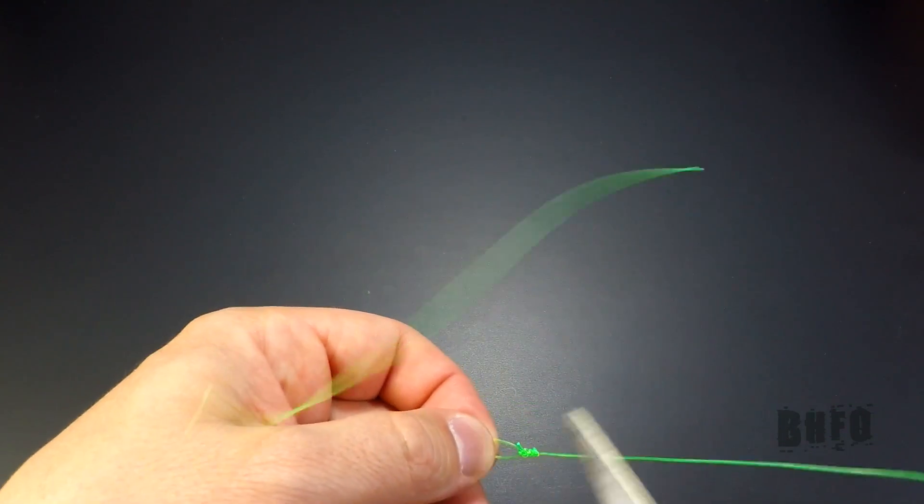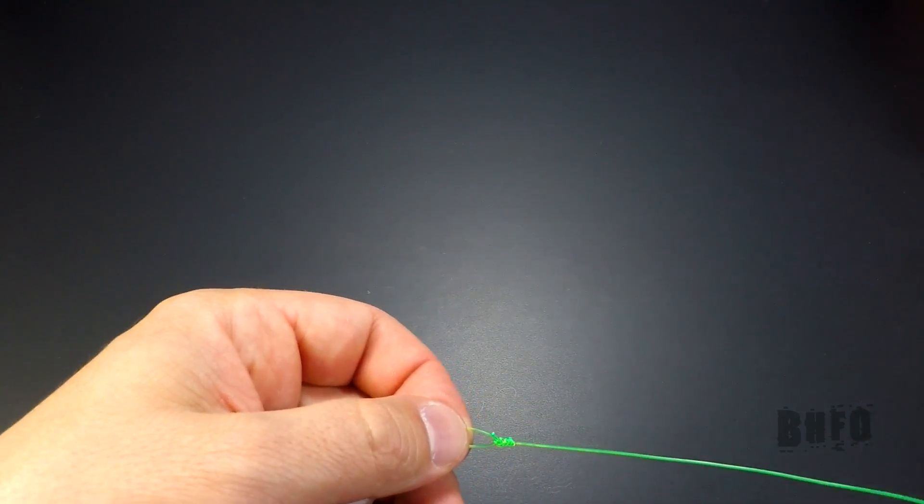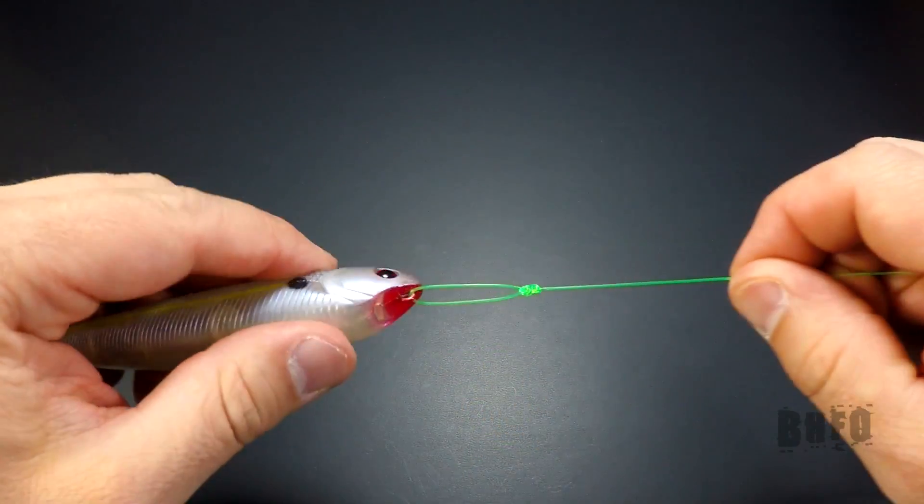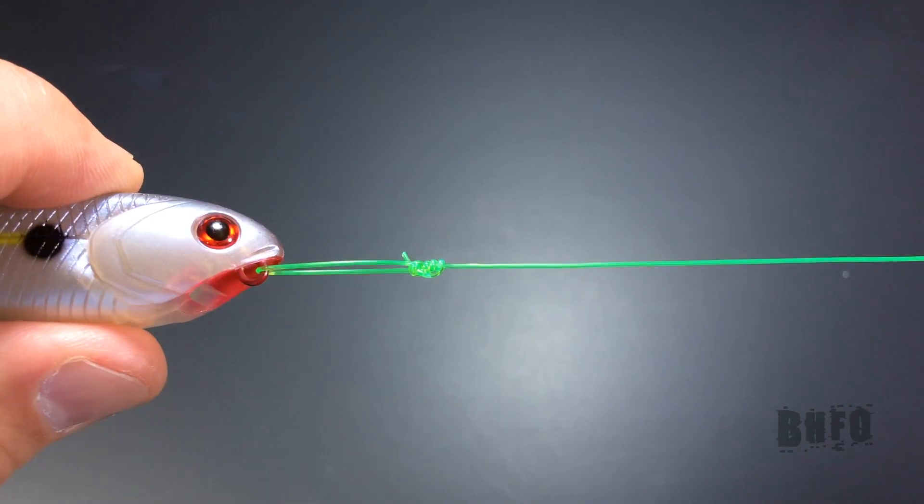Now, trim the tag a little less than a quarter inch. This is what it should look like.